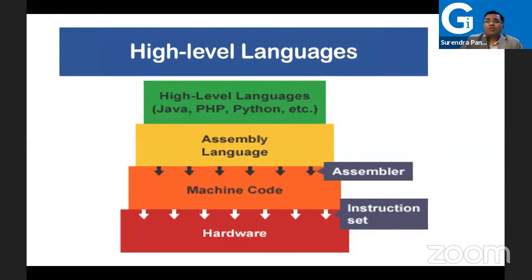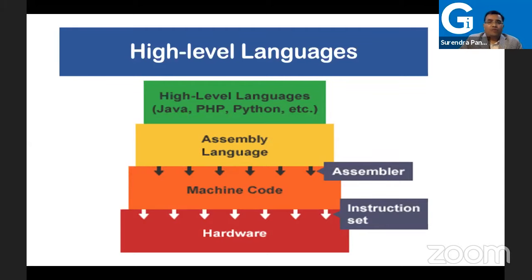Python is a high-level language. What does high level mean exactly? High-level language is specifically created for programmers. Programmers don't want to write machine-level language or understand the hardware part. They want to focus on the business part — on what tasks they want to do — not on the machine level. Like driving a car, you're interested in driving but not in how the engine is created. So you write your own English language, and that's what Python is.